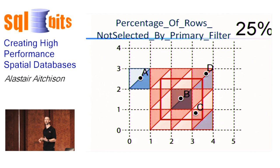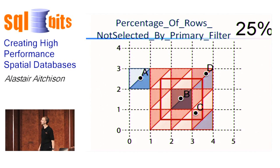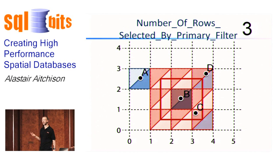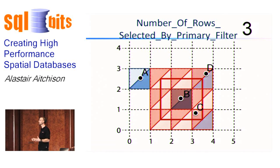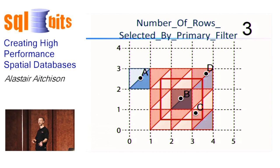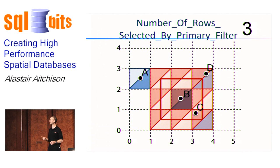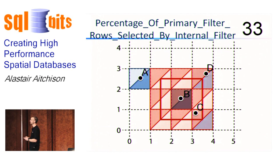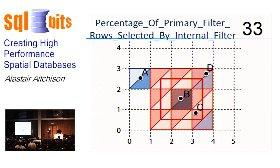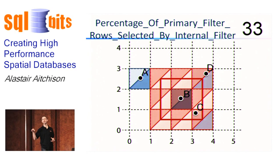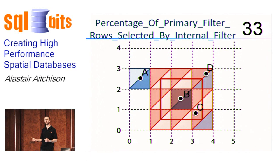That leaves us with the remaining three points, and they are selected by the primary filter. Now, at this point you might think all three rows have to be passed from the primary filter to the secondary filter. But actually, we can do a little bit better than that. Point B partially intersects a cell that was totally covered by the red polygon. Now in that circumstance, we know that point B itself must lie within the red polygon. There's no way it could partially lie in a square that was totally covered and not be included itself. So point B we can pre-select based on the primary filter alone. Again, we don't have to call the secondary filter. So 33% of the rows selected by the primary filter can be included in the result set, and that's called the internal filter when we're able to do that.